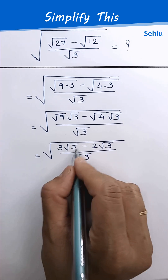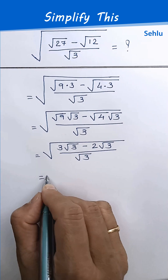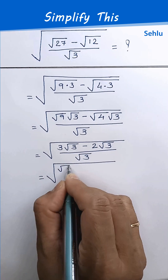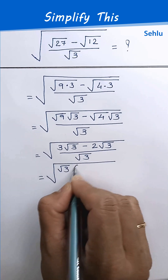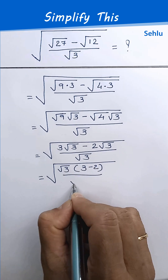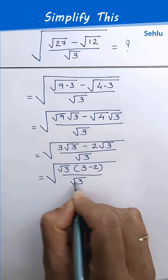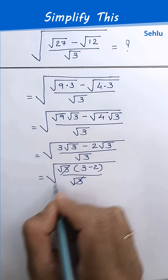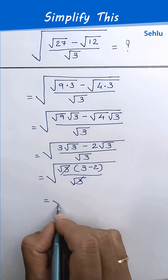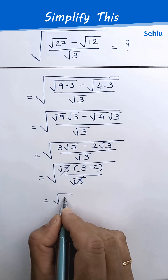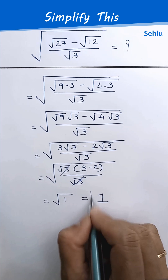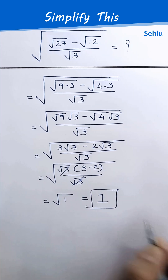Square root of 3 can be factored out. So it will be square root of 3 times (3 minus 2), over square root of 3. The square root of 3 gets cancelled, and 3 minus 2 is 1. So we have 1, which is the answer.